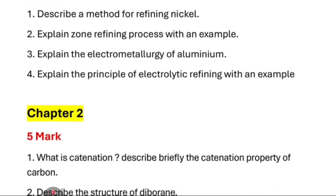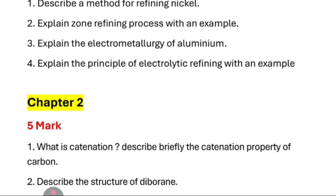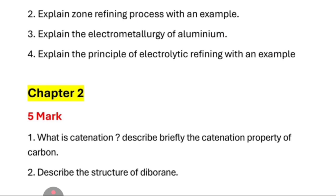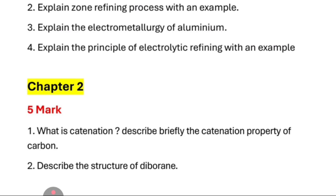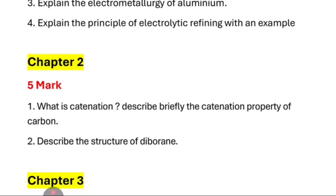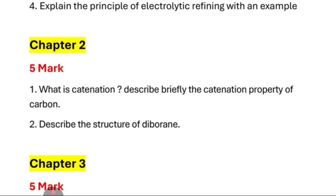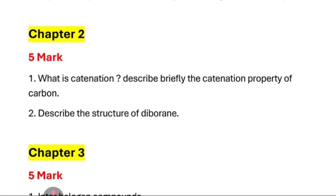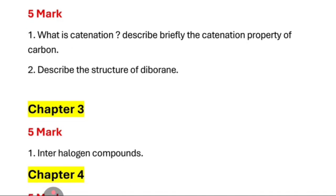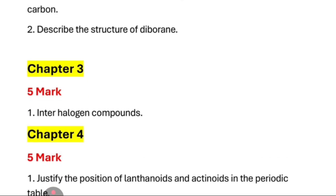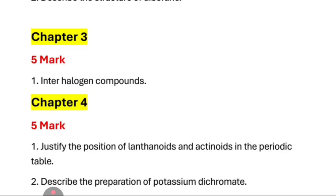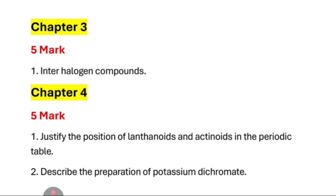That's Chapter 2: First one — what is catenation? Describe briefly the catenation property of carbon. Second one — describe the structure of diborane. That's Chapter 3: 5-mark inter-halogen compounds. Chapter 4: Justify the position of lanthanides and actinides.